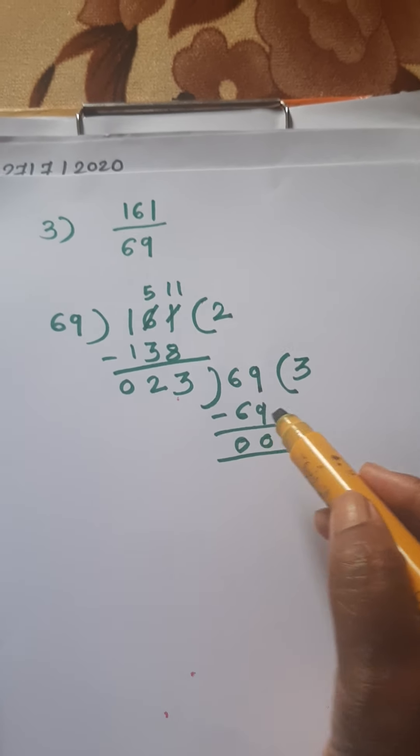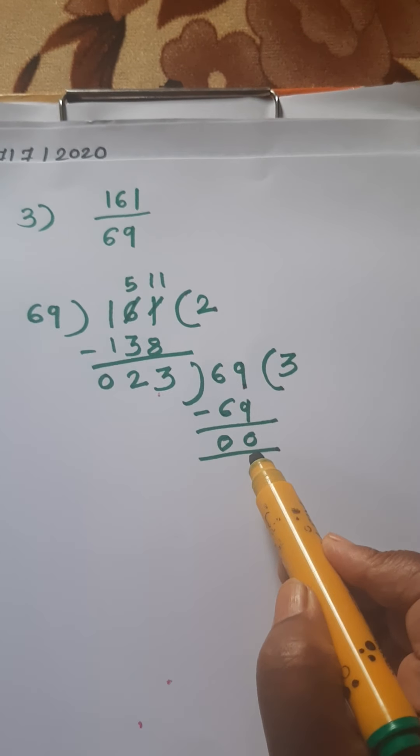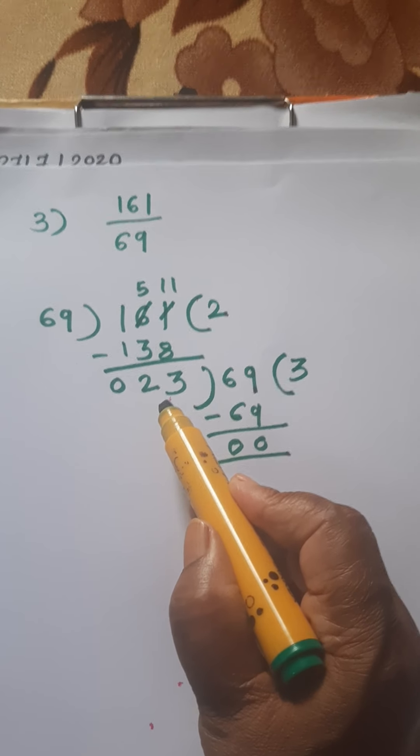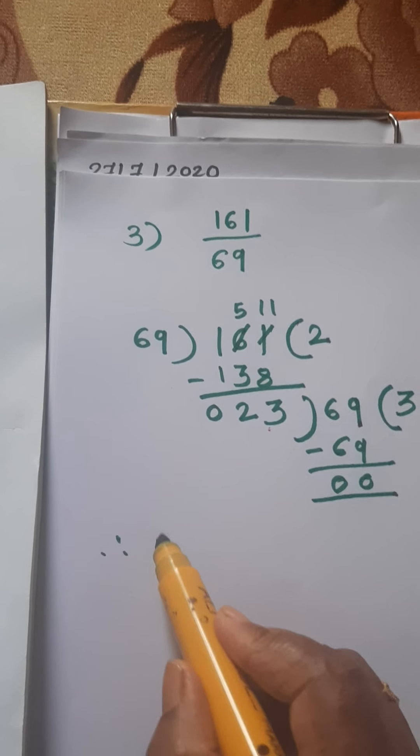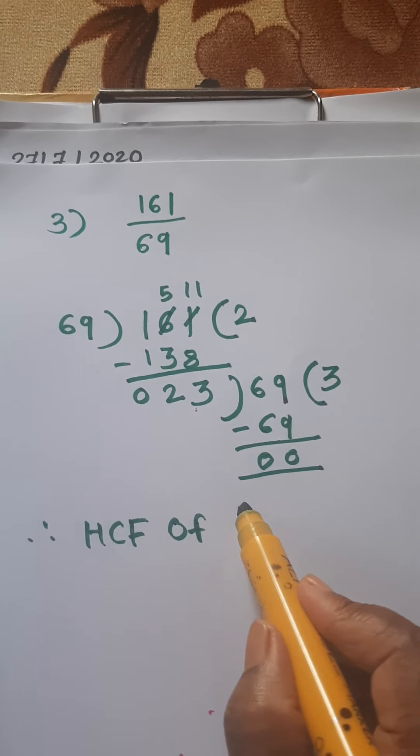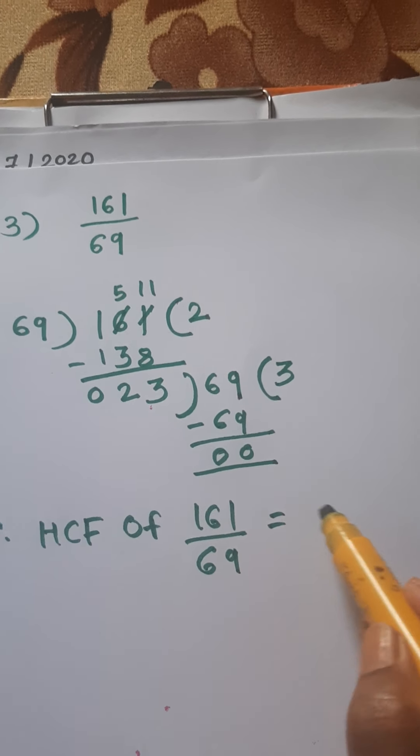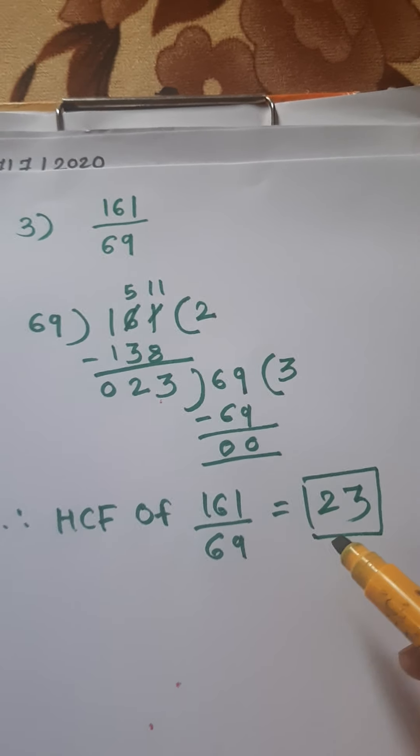You know, after dividing by the number, when we get the remainder 0, that number is HCF of the given example. So HCF of 161 upon 69 is equal to 23.